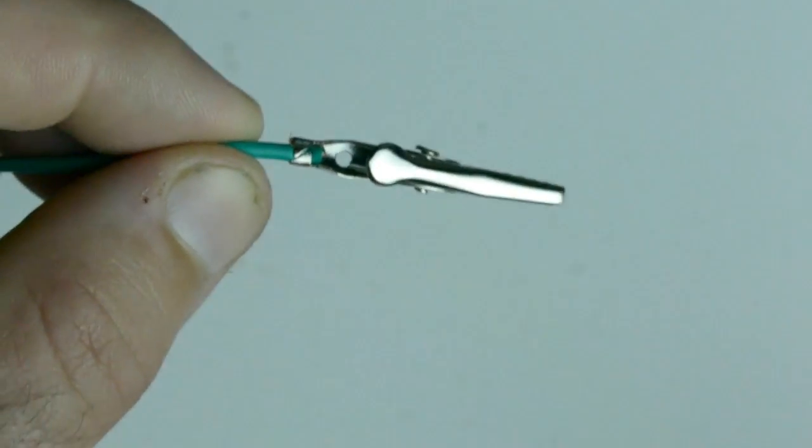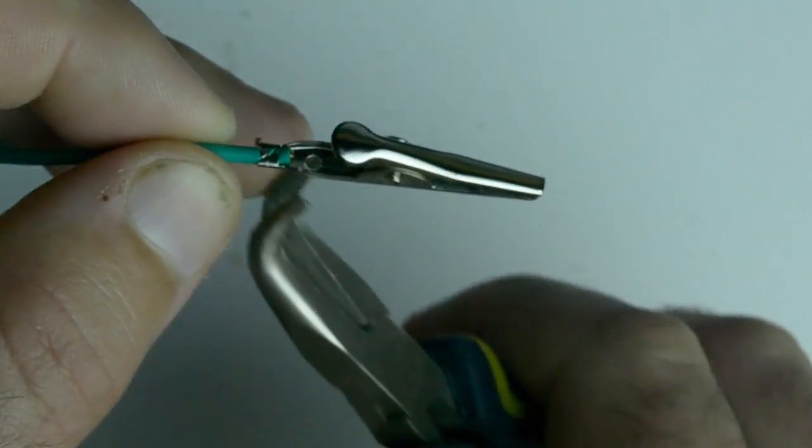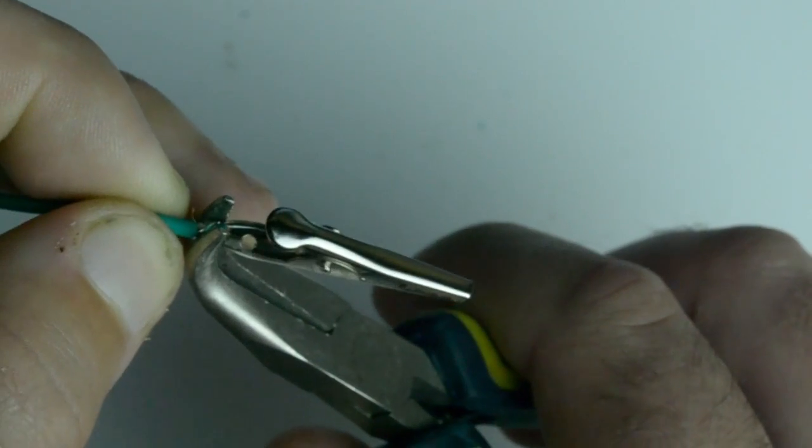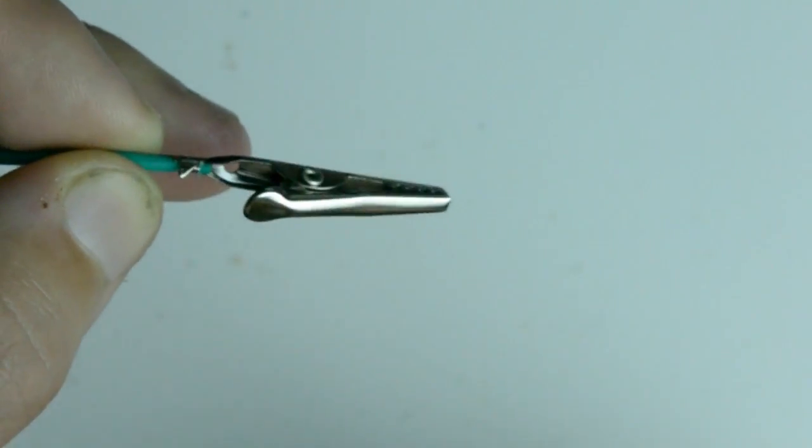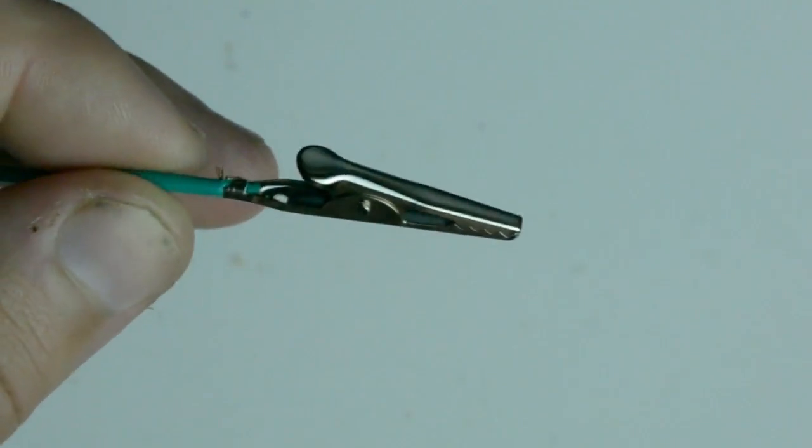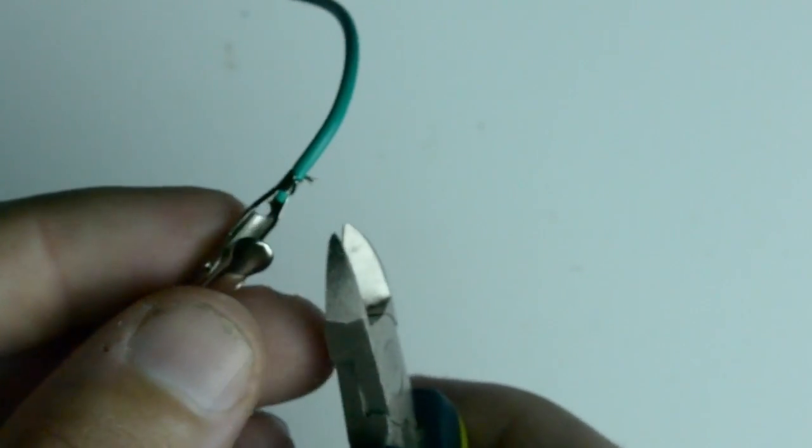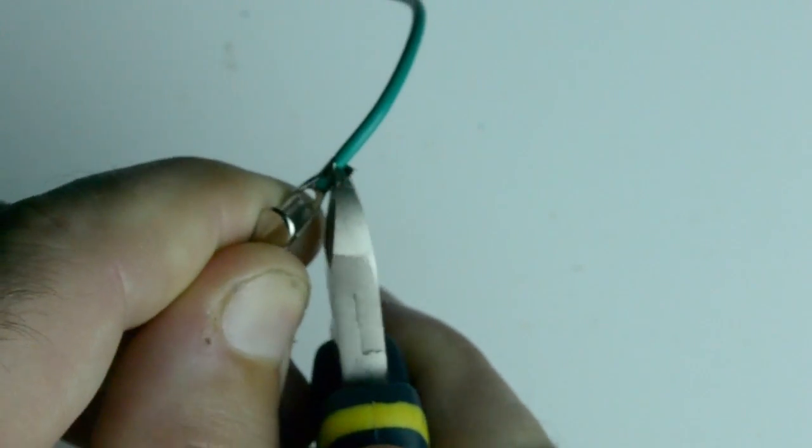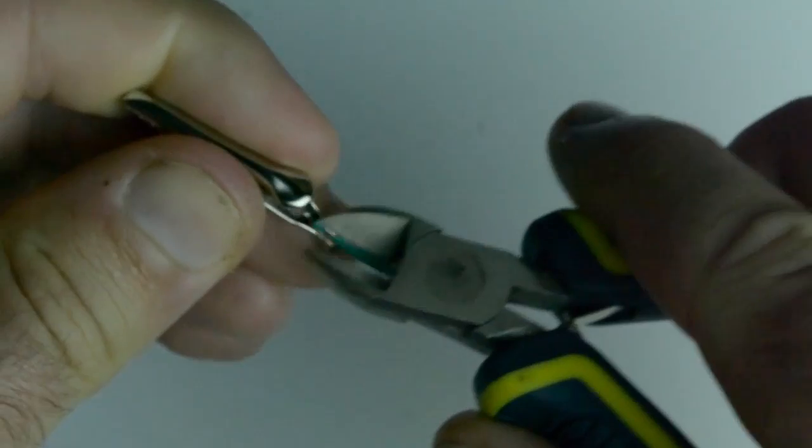Now the first thing you got to do is you got to open up this crimp. So the first thing I do is I squeeze it with a pair of pliers and it lifts up those little tabs. Then you can go with a pair of side cutters or something like that, maybe even small pliers, and you can pry open the crimp.